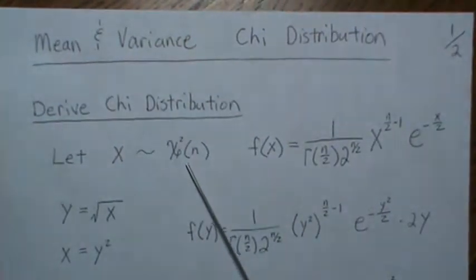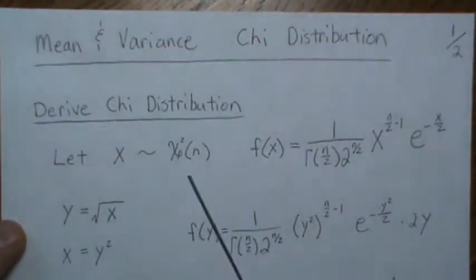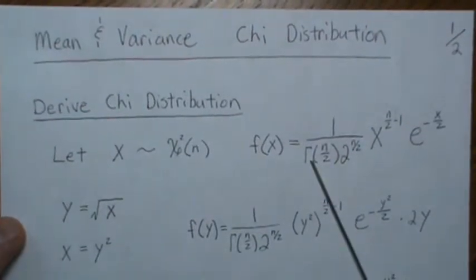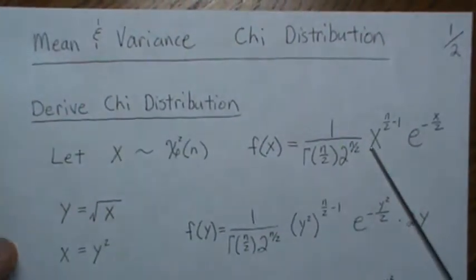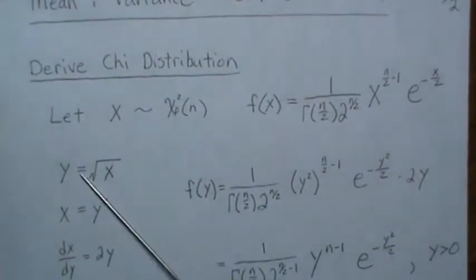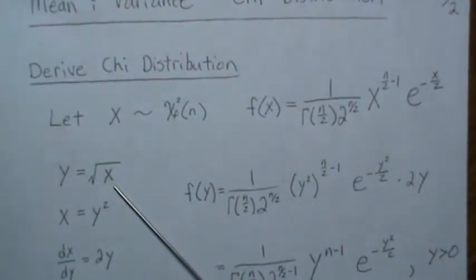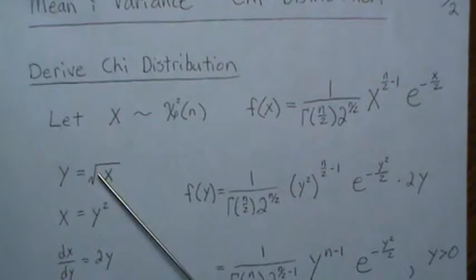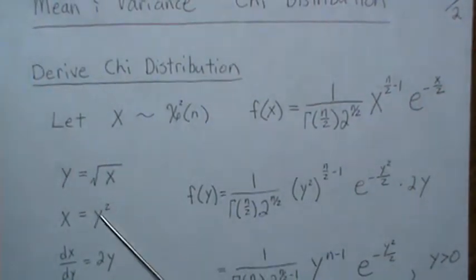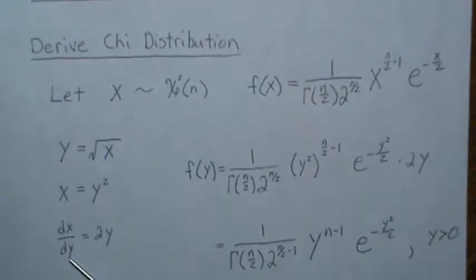So if we let X be chi-square with density function f(X), and we know this integrates to one, we let Y equal the square root of X, the positive root, which is actually called the principal root. We back solve for X and take the derivative with respect to Y.